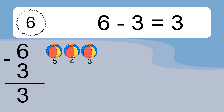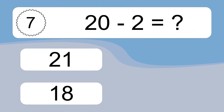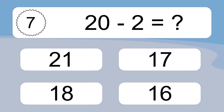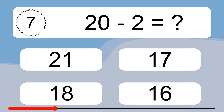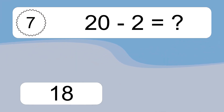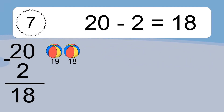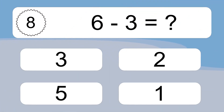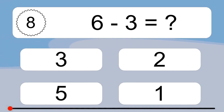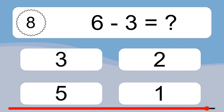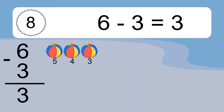6 minus 3 equals 3. Let's count it. 5, 4, 3. 20 minus 2 equals what? Let's count it. 19, 18. 6 minus 3 equals what? 6 minus 3 equals 3. Let's count it. 5, 4, 3.